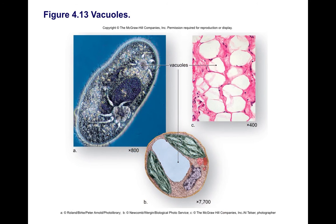Finally, the last group of endomembranes I want to mention is vacuoles — these are very large membrane sacs. They are often very prominent in plant cells, where they can take over most of the cell. You can consider them as a kind of garbage depot for a plant cell, where any material that cannot be removed from the cell ends up building up.